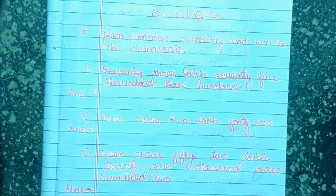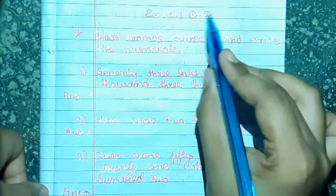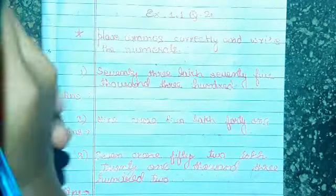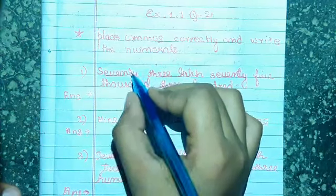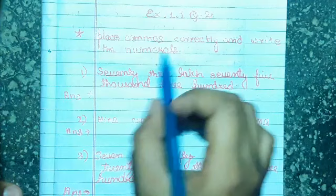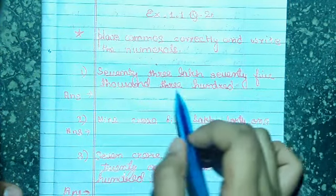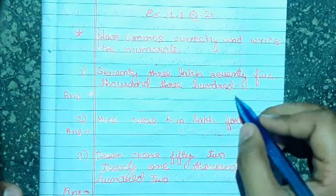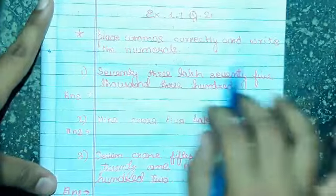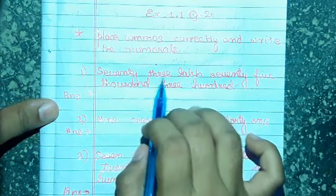In the first video we uploaded Exercise 1.1, Question Number 1. This is Question Number 2. Let's begin. The question says: place commas correctly and write the numerals. It is 73 lakh 75,300. By this sentence you understand we have to put commas and write in numbers.